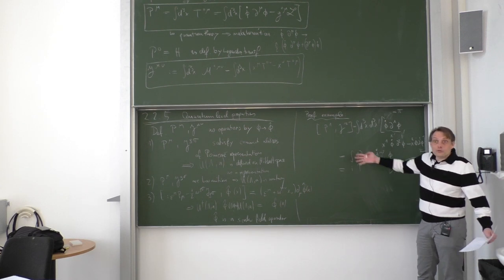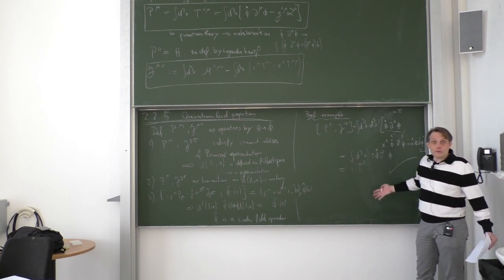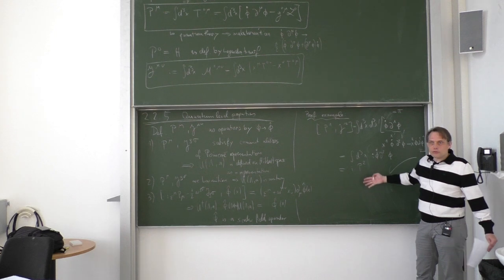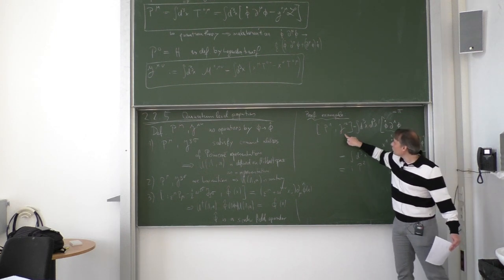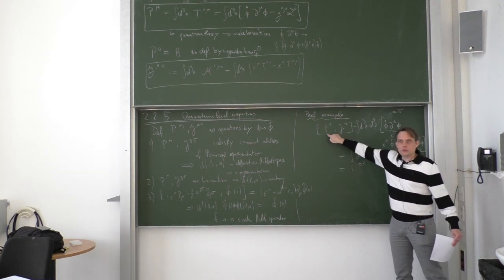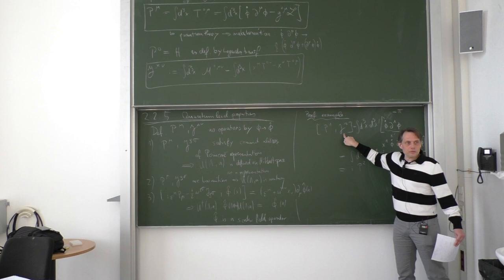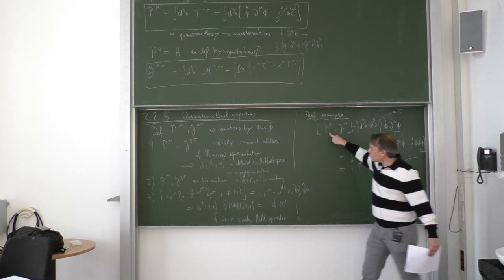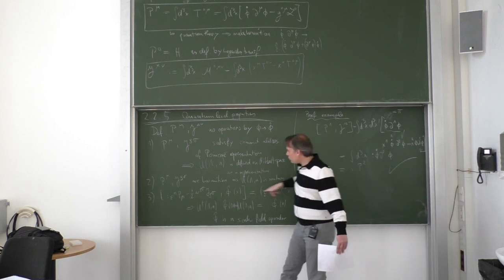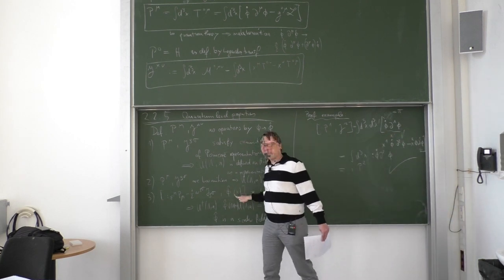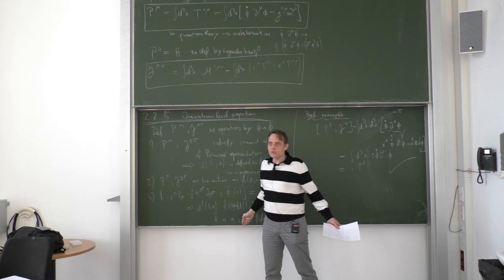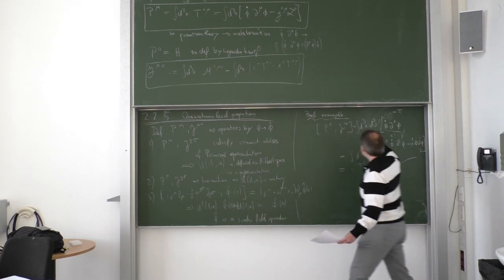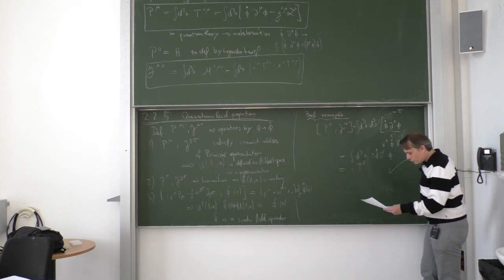You need to do that for general indices, and also for P with P, P with J, J with J, and between P with φ, J with φ. All those commutation relations work in the same way, so this was just one illustration.